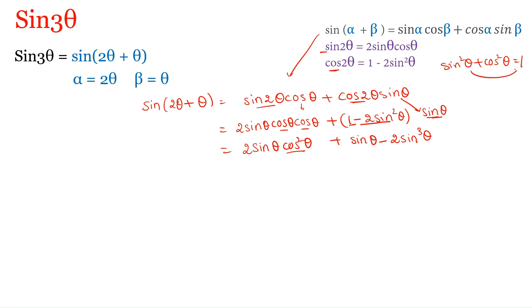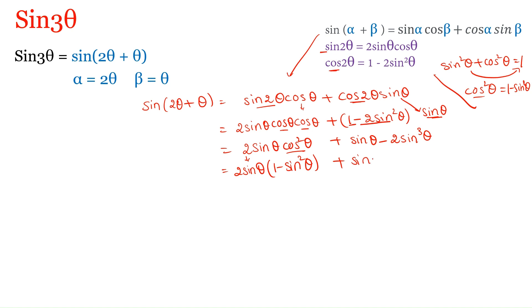Transposing sin²θ to the other side gives cos²θ = 1 − sin²θ. We substitute this here: the initial 2 sin θ remains as it is, and in place of cos²θ we write 1 − sin²θ. The next two terms are written as they are. We then multiply: 2 sin θ × 1 = 2 sin θ.